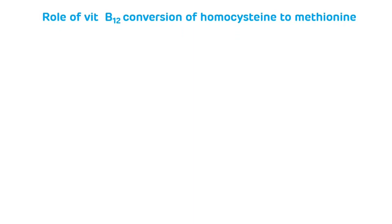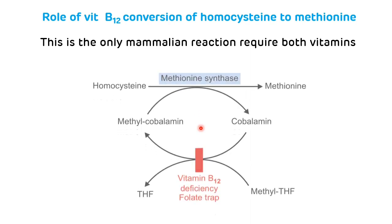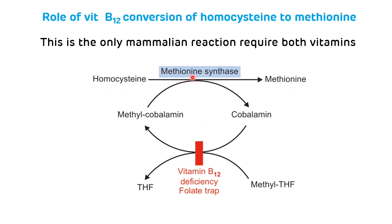The second enzyme system requiring vitamin B12 as a coenzyme is the conversion of homocysteine to methionine. This is the only mammalian reaction that requires two vitamins — vitamin B12 and folic acid. Methionine synthase requires cobalamin as well as methyl tetrahydrofolate. During this reaction, the methyl group from cobalamin is transferred to homocysteine, converting it to methionine, and cobalamin removes the methyl group from methyl tetrahydrofolate, converting it to free tetrahydrofolate, which can then take part in various one-carbon reactions. In vitamin B12 deficiency, methyl tetrahydrofolate is not converted to free tetrahydrofolate, resulting in the folate trap.